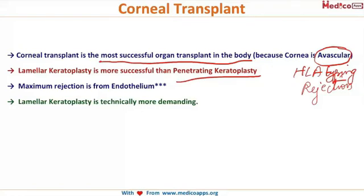Whatever rejection does occur in corneal transplants comes from the endothelium, not from the other layers. In lamellar keratoplasty, the recipient retains their own endothelium, so there is no rejection of that layer. This makes lamellar keratoplasty more successful than penetrating keratoplasty. However, the drawback is that it requires a lot of practice — the learning curve is very high and it is a technically more demanding procedure.